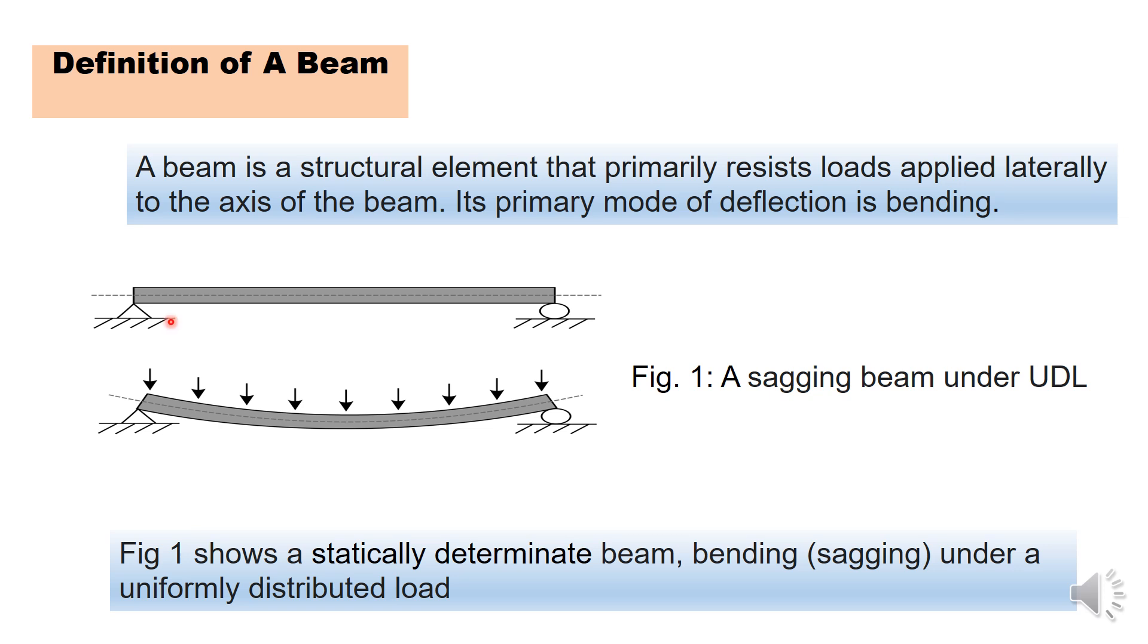If you look at this diagram here, we have a simply supported beam showing you UDL, Uniformly Distributed Load that was applied laterally on the beam, and this led towards sagging. The bending is what we call sagging. So this beam is a determinate beam that is bending under uniformly distributed loads.